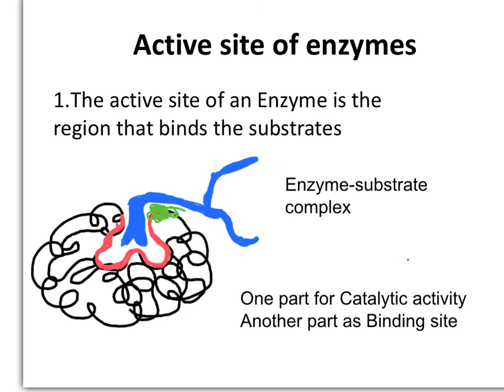The binding site of an enzyme possesses two independent structural characteristics. One part provides the amino acids for the catalytic groups for the catalysis of the reaction, and another part provides the amino acids to hold the substrates.